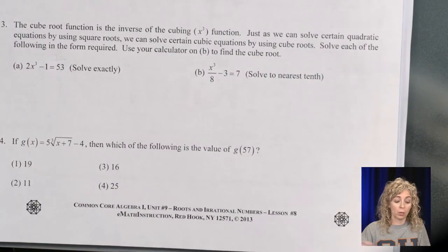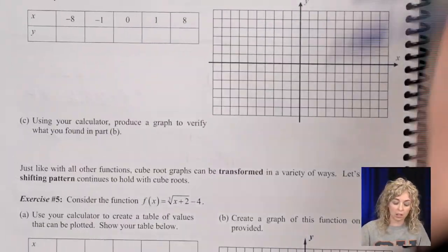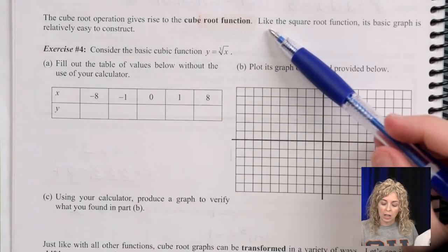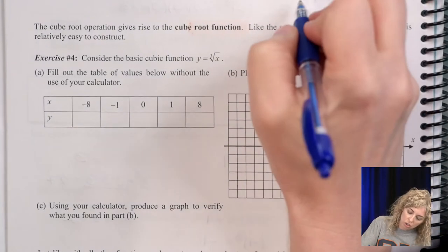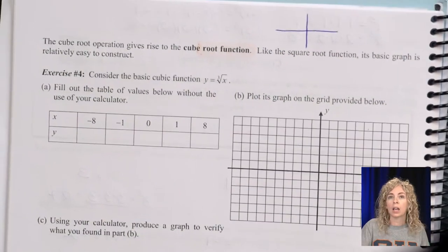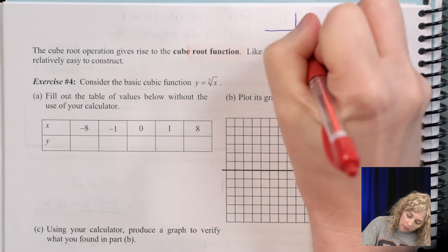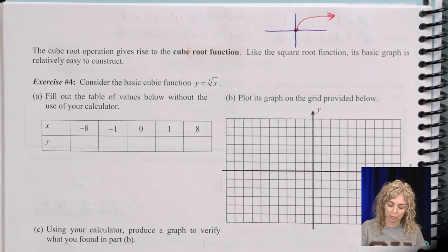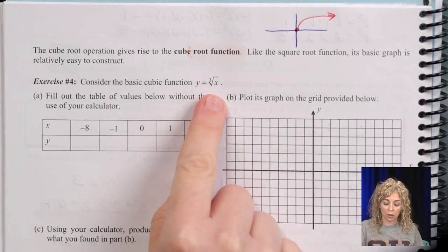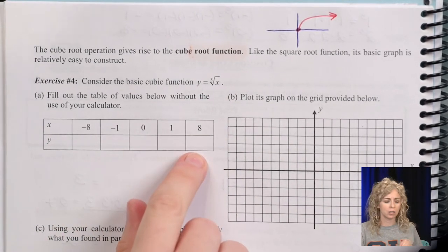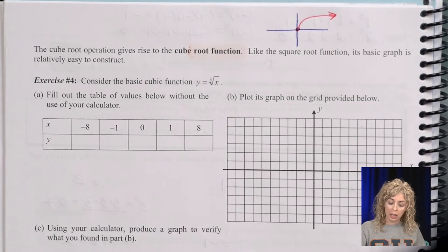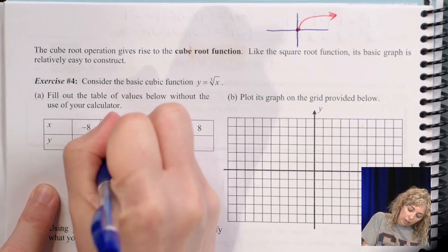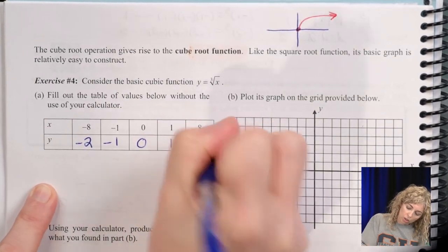Let's go to the back where we can do some graphing. What does this function look like? The cube root operation gives rise to the cube root function, like the square root function. So remember, the square root function, let's give ourselves a picture of that. It had a starting point, and then it was half of a parabola. So that's the square root function. Now we're going to take a look at the cube root function, and we're going to use the table here. I like it because we have small x's filled in. And we did this on the previous page. The cube root of -8 is -2, cube root of -1 was -1, and 0, 1, 2.